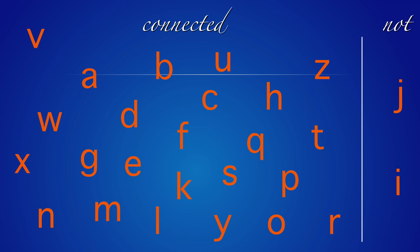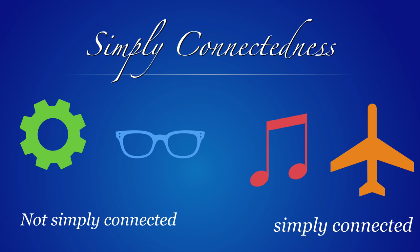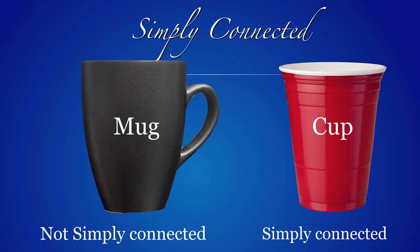And now we come to the concept of simply connectedness. Simply connectedness means that we can pull together any loop inside the region to a point — it cannot have holes. On the left we have two figures which are not simply connected. On the right-hand side we have figures which are simply connected. Here is a mug — it is not simply connected; it has this handle. A cup is simply connected.